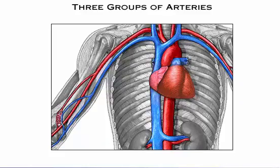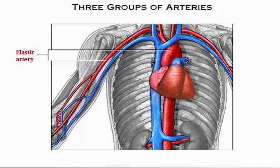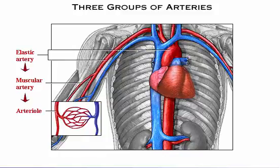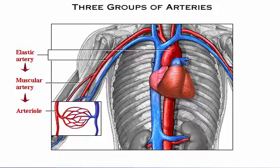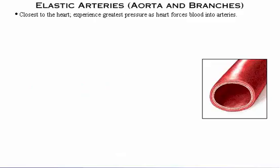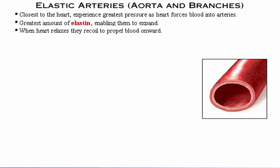In terms of relative size and function, arteries can be divided into three groups: elastic arteries, muscular arteries, and arterioles. Elastic arteries are closest to the heart, where they experience the greatest pressure as the heart forces blood into them. They have the greatest amount of elastin, enabling them to expand. When the heart relaxes, they recoil to propel blood onward.